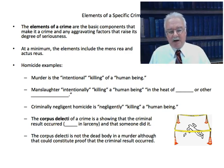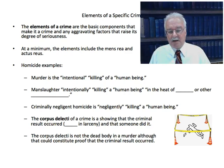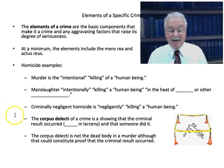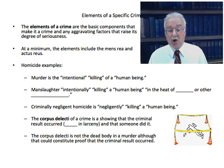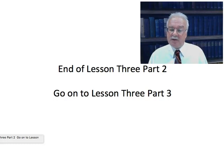The corpus delicti of a crime is a showing that the crime result occurred — that there was a theft in larceny, or a death in murder — and that somebody did it. However, the corpus delicti is not the dead body itself, although that could constitute proof. Corpus delicti is being able to show that the criminal result — theft in larceny, a burnt car in arson, or a dead body in murder — actually occurred. That's the end of Lesson 3, Part 2; now it's time to proceed to Lesson 3, Part 3.